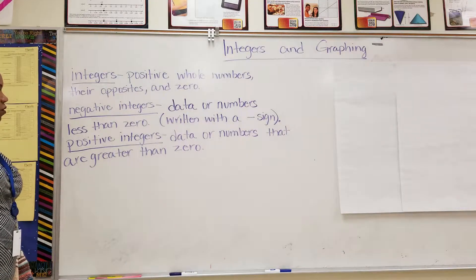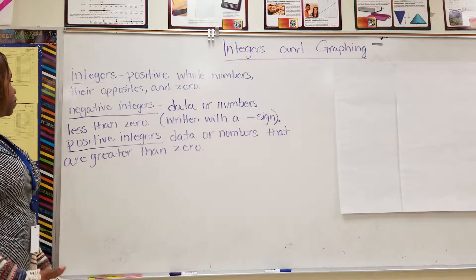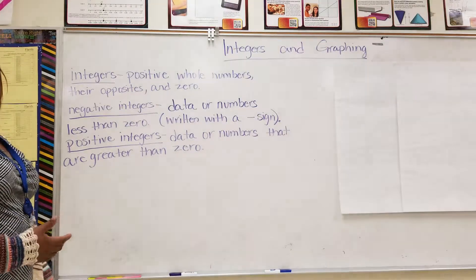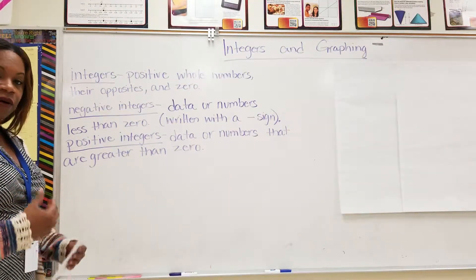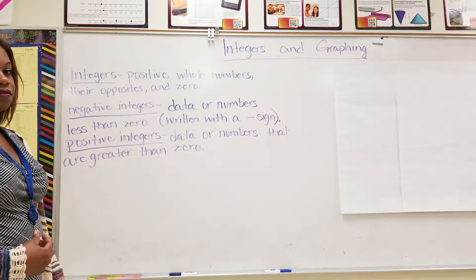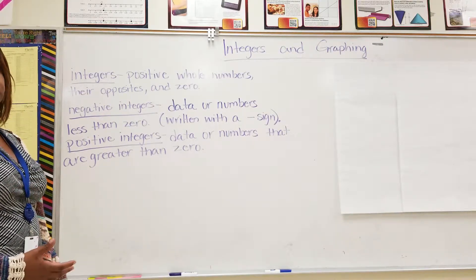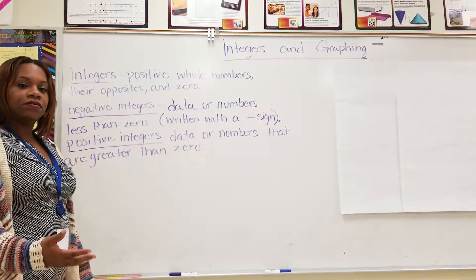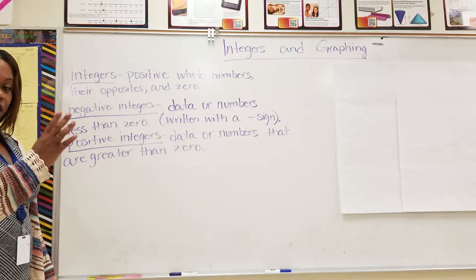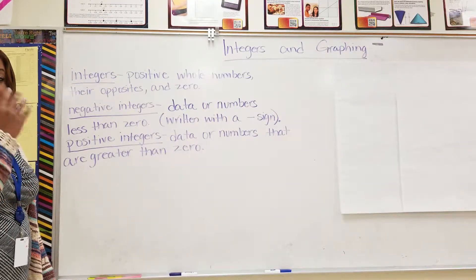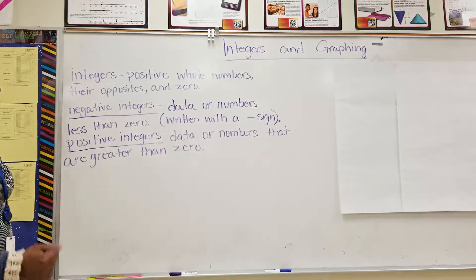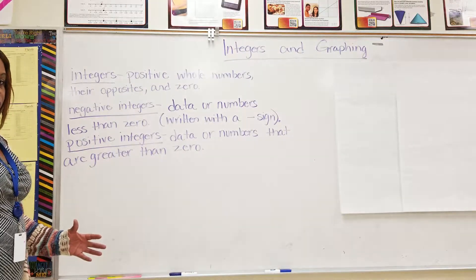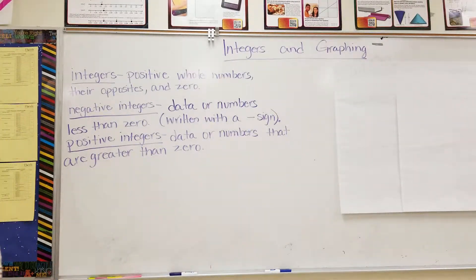Then we have positive integers — that is data or numbers that are greater than zero. So, if I now have $5, then that will represent it as a positive integer — positive 5. But when we write positive 5, we don't write a plus sign and 5. We just write the number 5. Please pause the video, copy down your notes, and then press play when you are ready to move on.